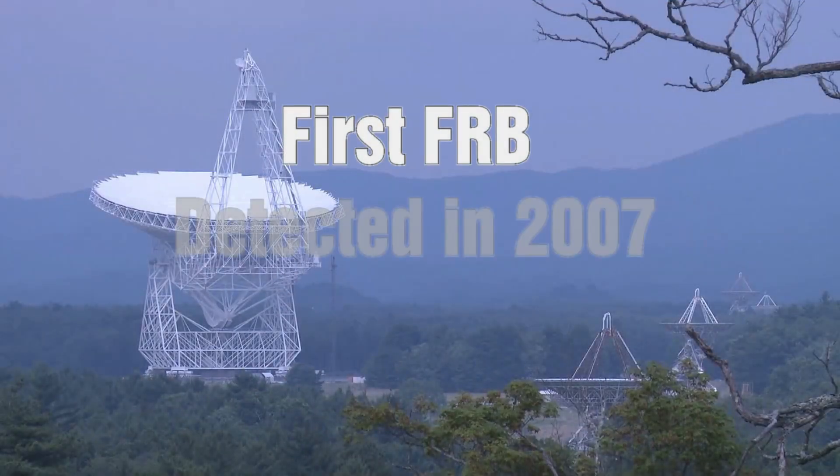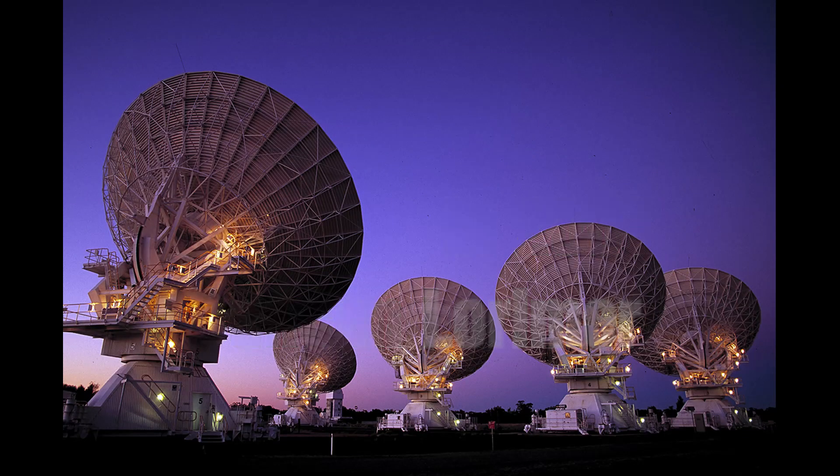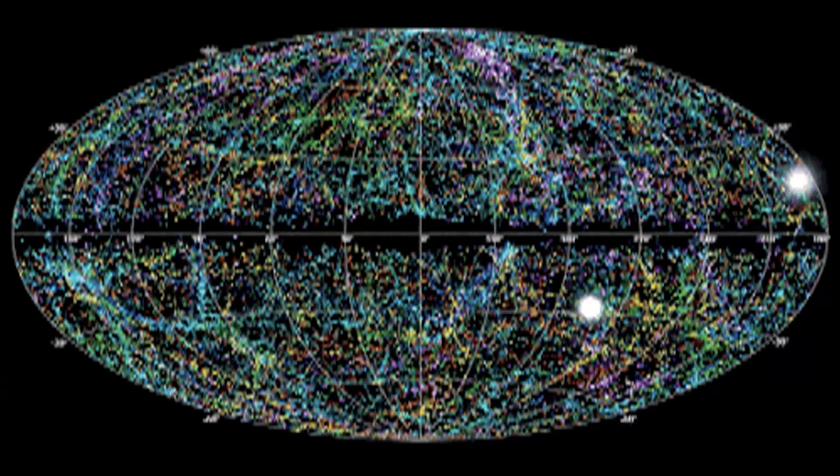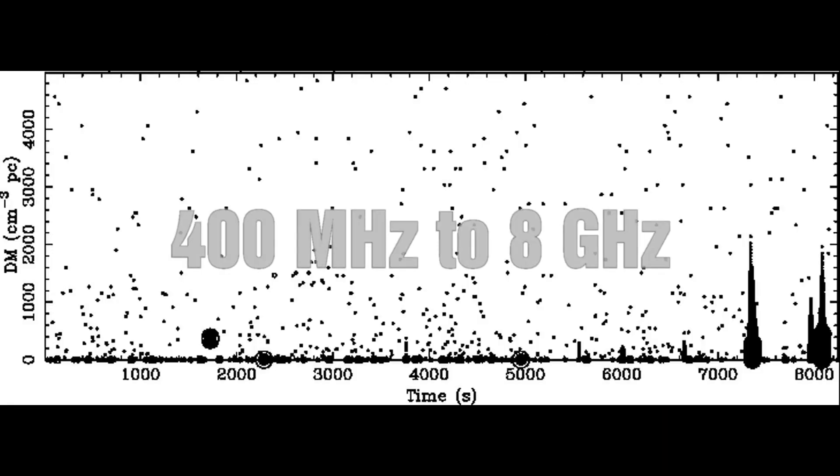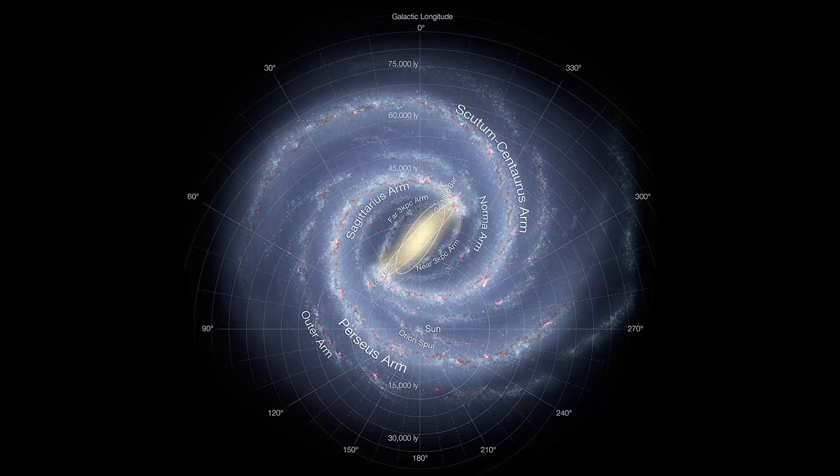They were first detected back in 2007 by Duncan Lorimer and are characterized by a very bright and very brief burst of radio photons. They have been detected at frequencies ranging from 400 MHz to 8 GHz. One important characteristic is the arrival time of the frequency components is dispersed, which is consistent with the fact that they have propagated through cold plasma.